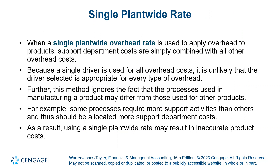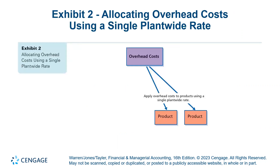The single plant-wide rate is the easiest — we have just one rate and every product gets allocated in the same way based on the same cost driver. We start with the easiest, the single plant-wide rate, then go to multiple production departments, and then to activity-based costing. As we go through each one, it becomes more complex to do the calculations. My caveat is: you would want to use the simplest possible approach that still gives us meaningful, appropriate, correct cost information about the products we are producing. We don't want to overly complicate things, but we want to use the best approach to understand our true costs.